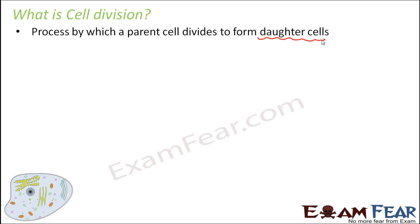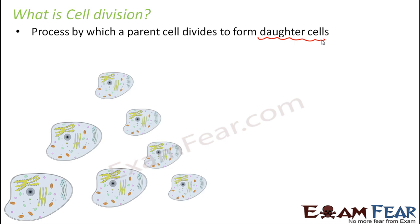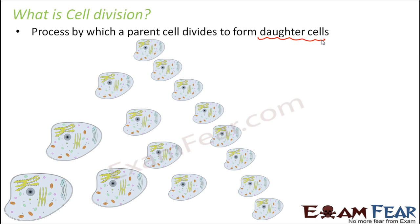So let us suppose here you can see on the screen a cell. So when this cell divides to form new cells, the process is known as cell division. So you see you started with just one cell and you ended up with almost 8 cells. So this is how the number of cells increases.